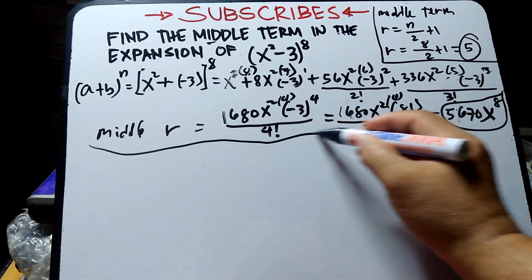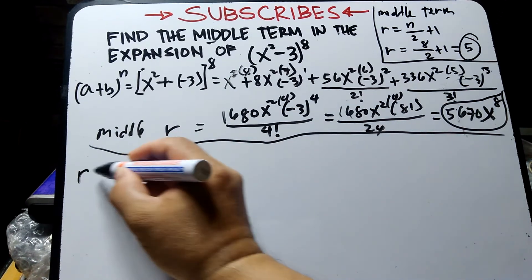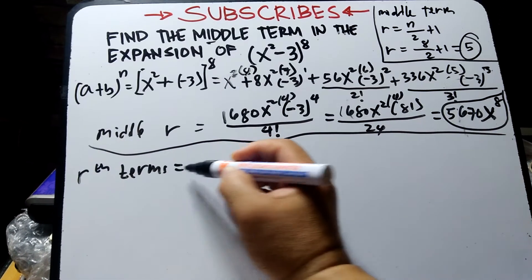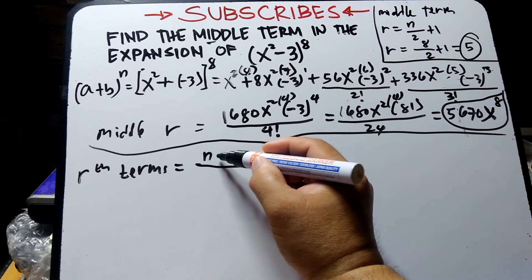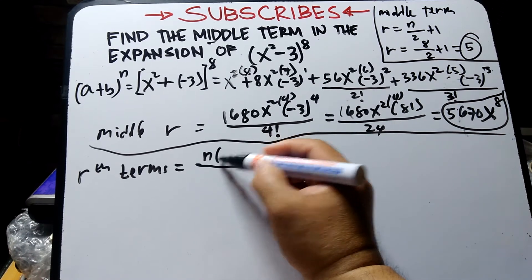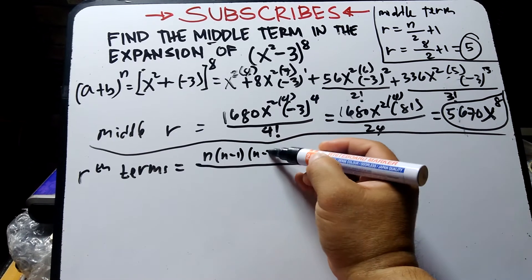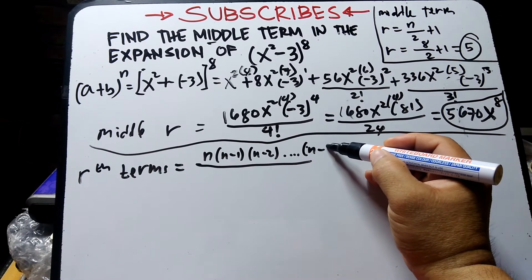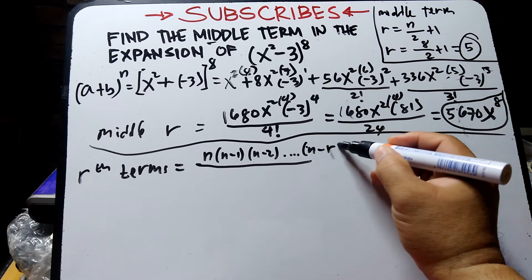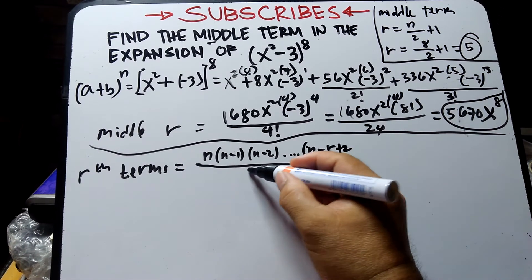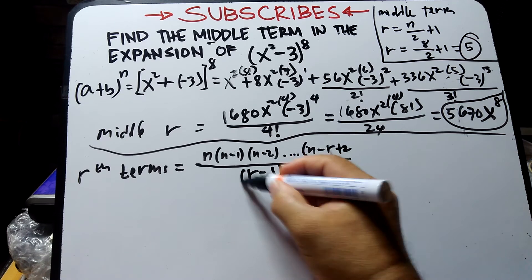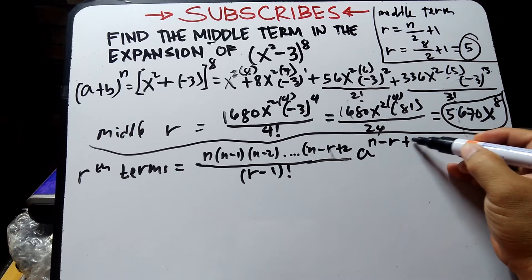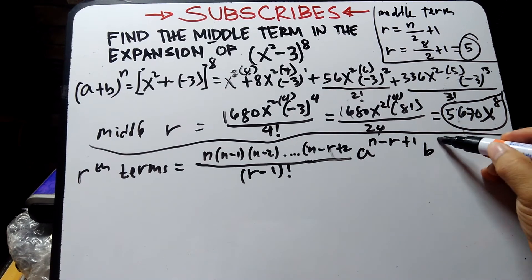The rth term equals n(n-1)(n-2)...(n-r+2) all over (r-1) factorial, then aⁿ⁻ʳ⁺¹ times bʳ⁻¹. Then substitute.